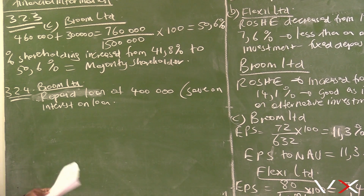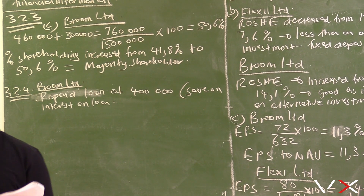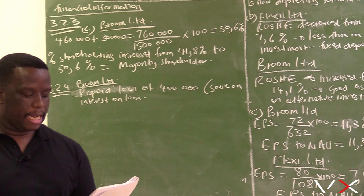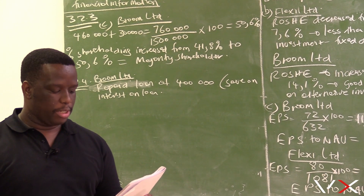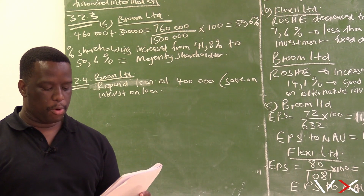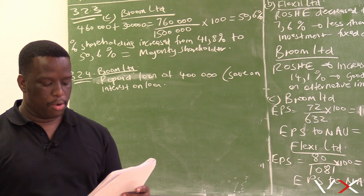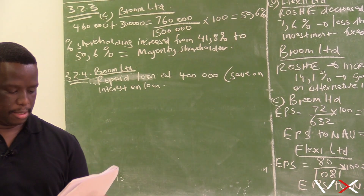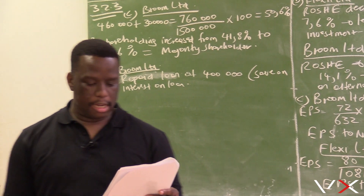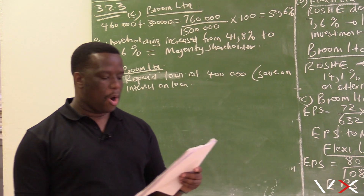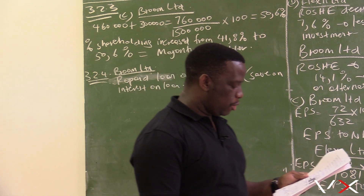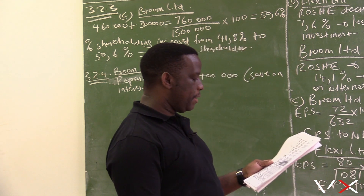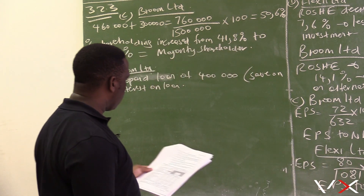The first decision by Broom Ltd: looking at the figures, Broom Ltd repaid the loan. They repaid the loan of 400,000. This repayment of the loan of 400,000 — how will this benefit the company?